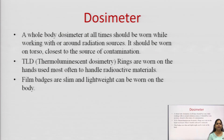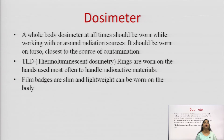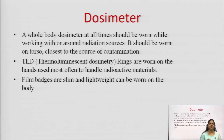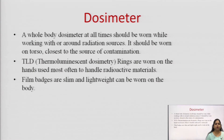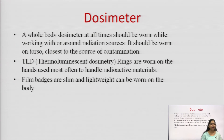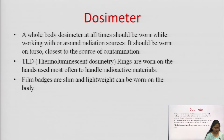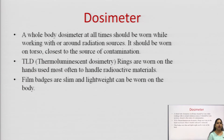The hands are the area most continuously exposed to radiation, while the rest of the body is covered with PPE — personal protective equipment. Film badges are quite slim and lightweight and can be worn on the body. These dosimeters cannot detect low energy beta emitters but can detect radiation from all other sources.